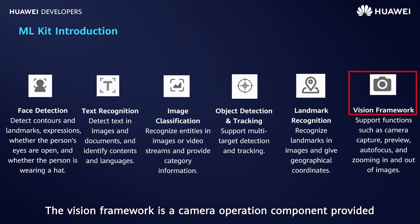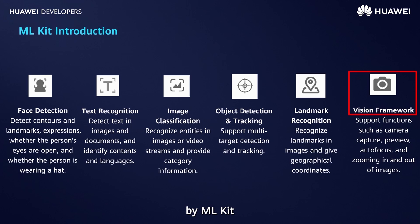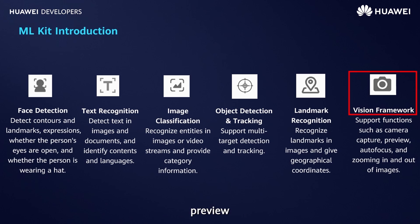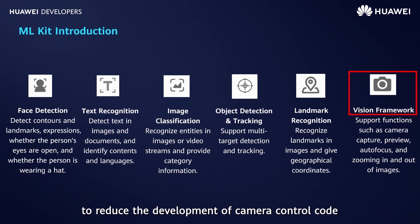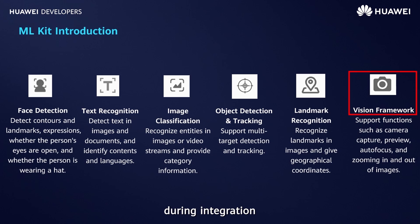The vision framework is a camera operation component provided by ML Kit. It provides functions such as camera capture, preview, autofocus, and zooming in and out of images. You can directly use this capability to reduce the development of camera control code during integration.